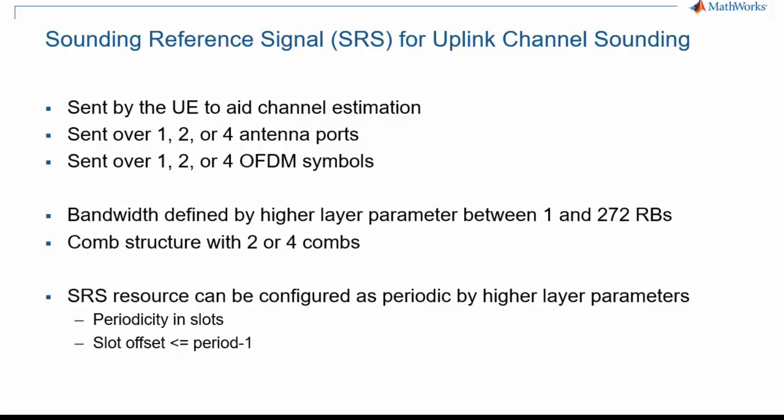The equivalent of CSI-RS on the uplink is the Sounding Reference Signal. SRS are sent by the UE to aid in channel estimation. They are sent over 1, 2, or 4 antenna ports. The same mechanism was already used for LTE, but SRS in 5G NR are a lot more flexible. The duration for SRS is 1, 2, or 4 symbols, as opposed to always 1 in LTE. There is a comb structure with 2 or 4 spacing in frequency, as opposed to always 2 in LTE. The SRS is not necessarily in the last symbol of the slot, and the bandwidth covered can be anything between 1 and 272 resource blocks.